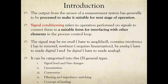The raw data is actually a signal. That signal may be too small and needs to be amplified. It may contain interference that has to be removed. It can be non-linear and require linearization. It might be in analog form and need to be converted to digital, or vice versa. There are five general types of signal conditioning: signal level and bias changes, linearization, conversion, filtering and impedance matching, and the concept of loading.